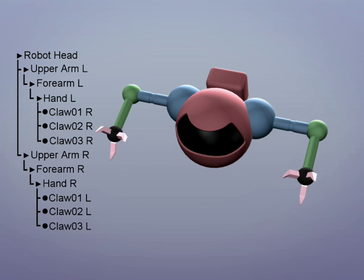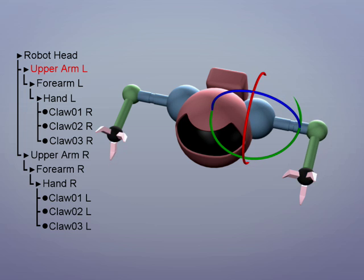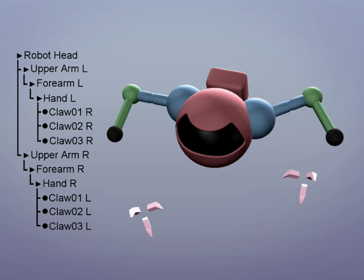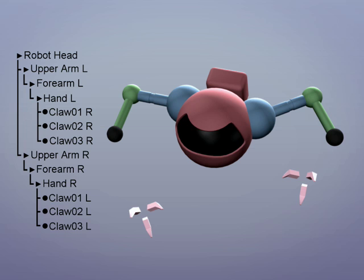Now the head moves everything because the other parts are below it in the hierarchy. Let's rotate the left upper arm and see what happens. Whoops, for some reason the claws have disconnected. If we look closely at the hierarchy we can see the mistake. The claws on the right side of the robot are parented to the left hand, which is then parented to the forearm and the upper arm.